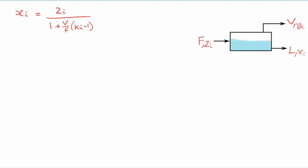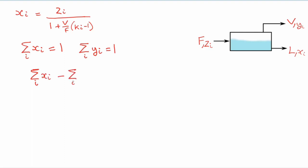We now have an expression for the liquid composition of each component based on the feed composition, the K values for each component, and the ratio of vapor to feed produced. We know that the sum of the mole fractions in the liquid phase must equal one, which is the same as the sum of the mole fractions in the vapor phase, so the sum of all liquid phase fractions minus the sum of the vapor phase fractions must equal zero.